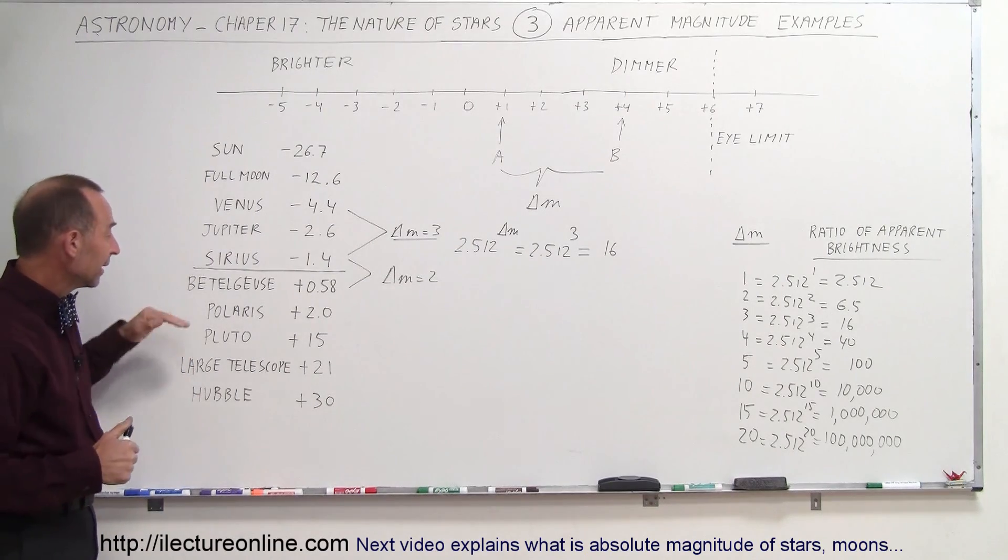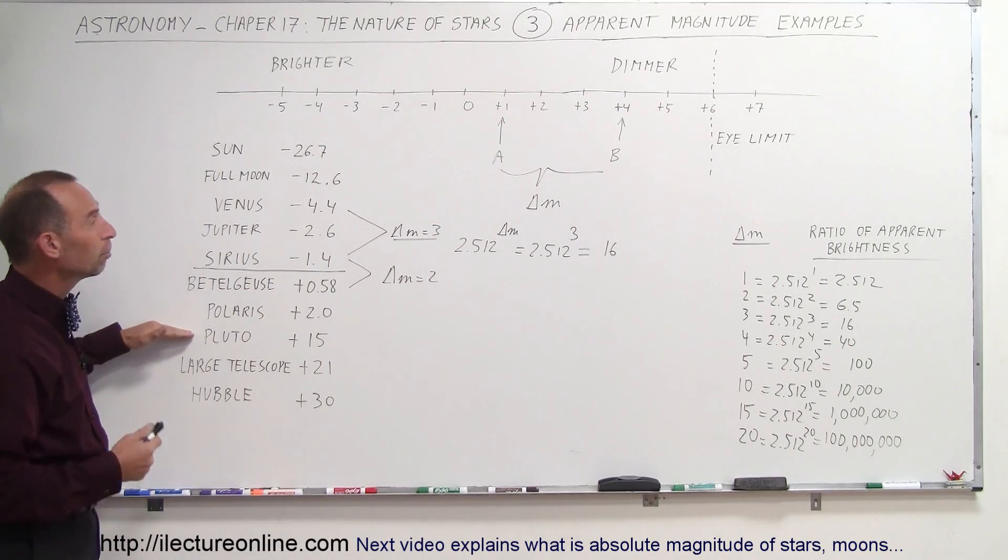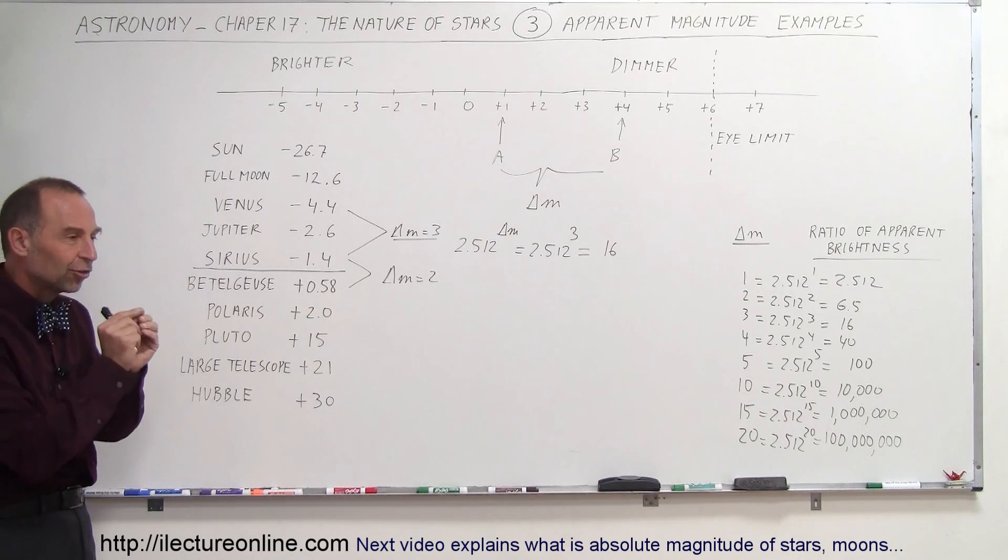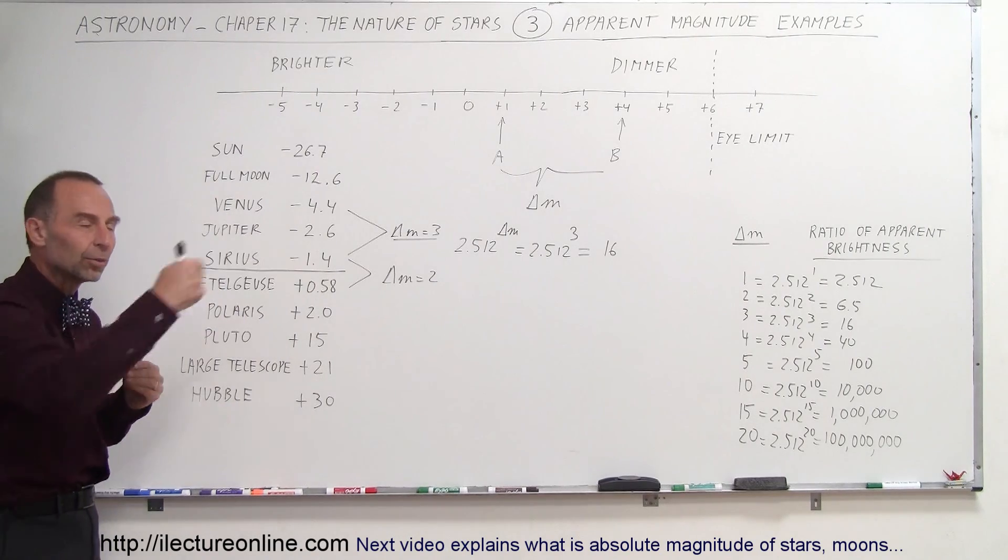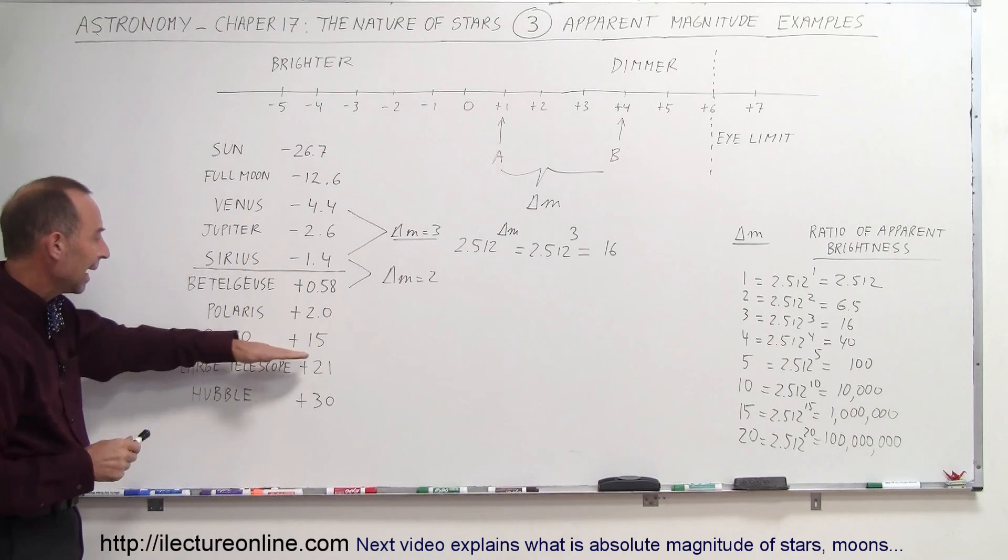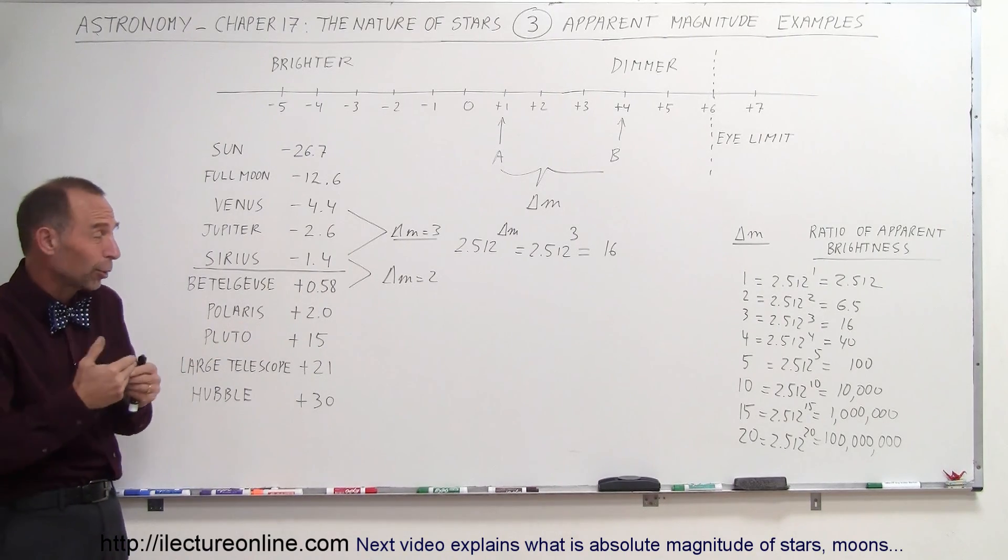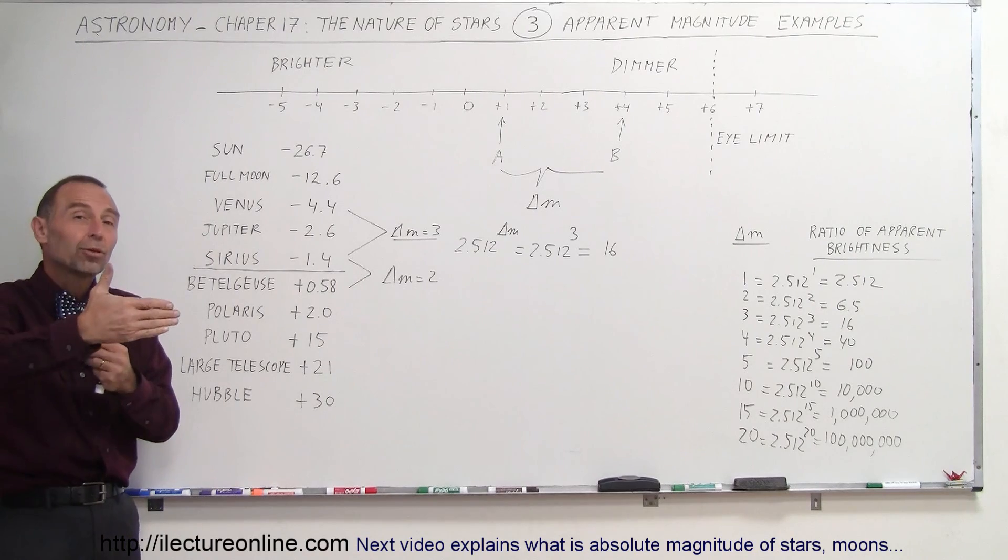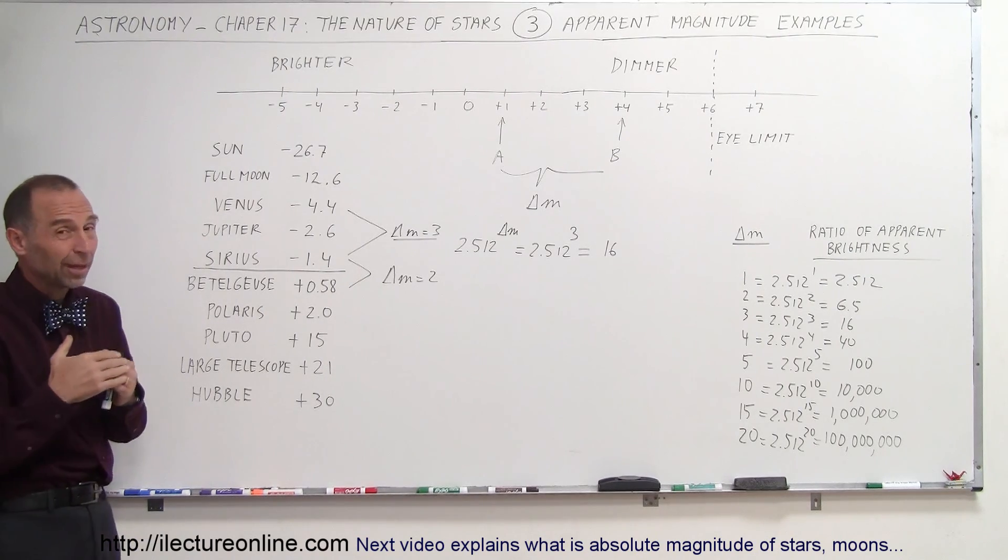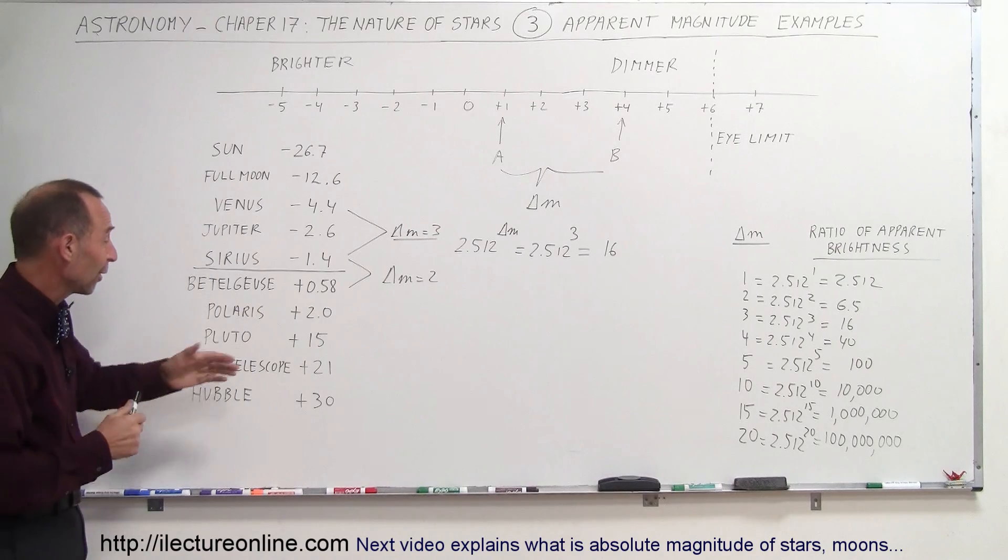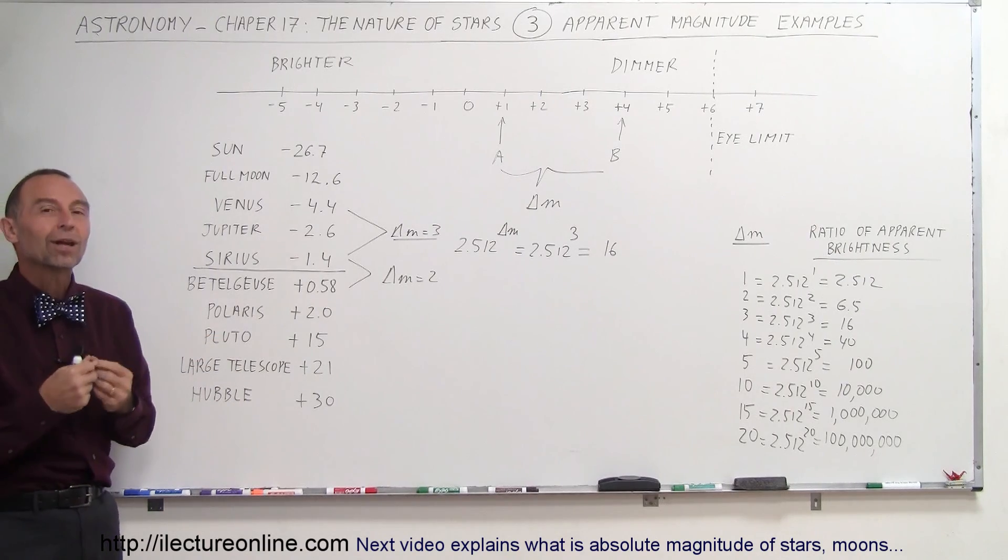Then we go all the way to the other side of the scale. Pluto is a very dim object, a very small body way beyond the orbit of Neptune typically. It has a magnitude of plus 15. Of course that depends a lot upon where Pluto is in its orbit. Sometimes Pluto is only 30 astronomical units away from the Earth, sometimes it's 50 astronomical units away. The brightness of Pluto will vary tremendously depending upon where in its orbit it's at.